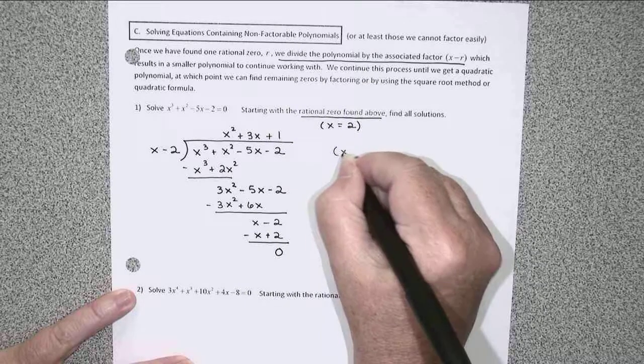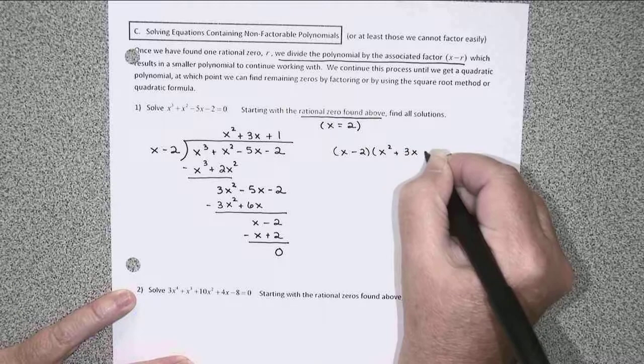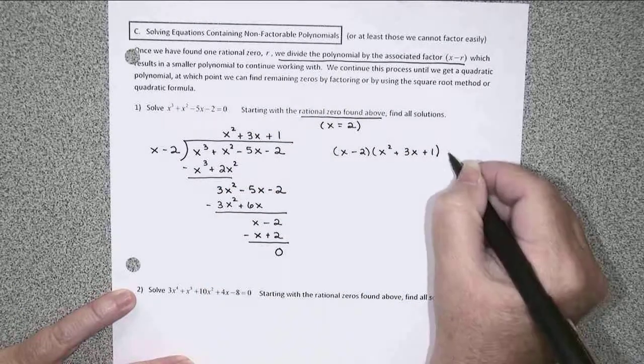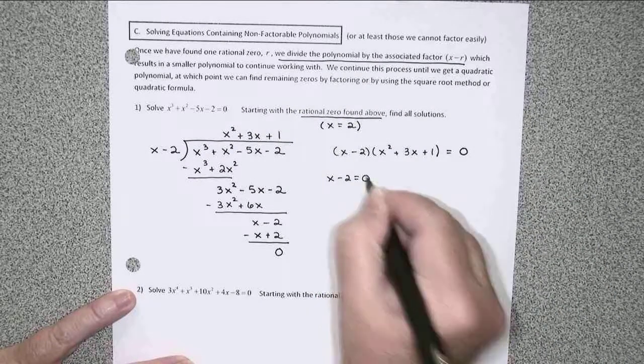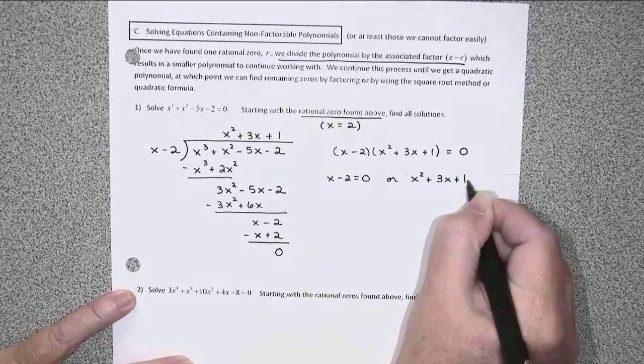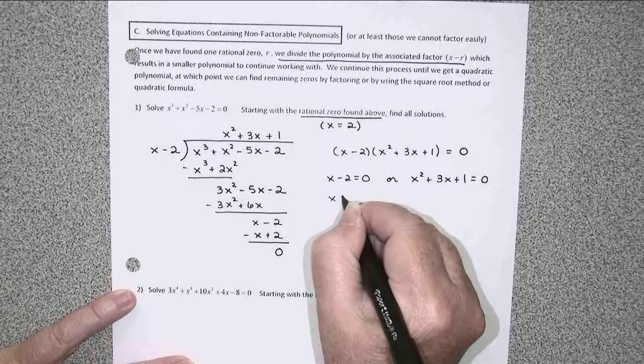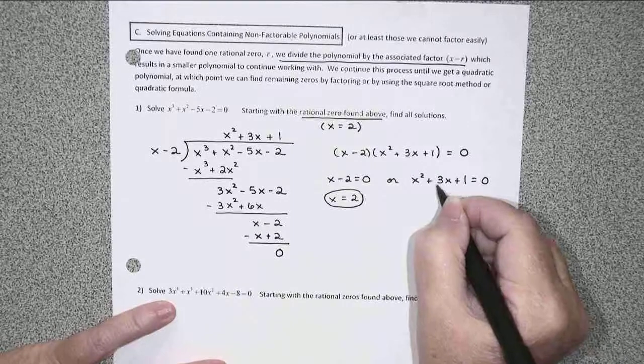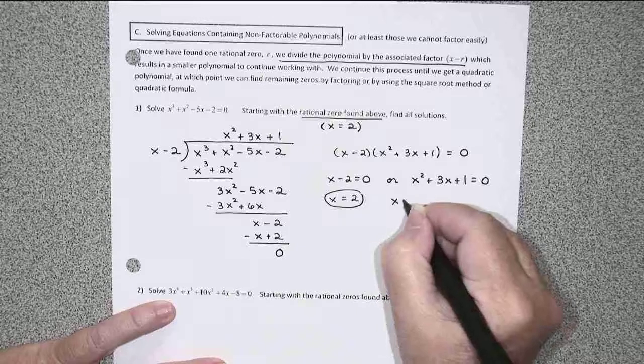We essentially now know that our original polynomial really factors using the x minus 2 and the quotient that we just found. So either x minus 2 equals 0 or x squared plus 3x plus 1 equals 0. That gives me the x equals 2, which we already knew. And this one, I don't think we're going to be able to factor, so I think we'll have to use quadratic formula to finish up.